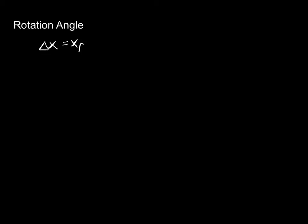In past chapters, when we wanted to measure how far something went, we usually used a displacement like delta x — how far did it go? We measured that as x final minus x initial. So in rotational motion, where something's going in a circle, we need some sort of equivalent to that, somehow measuring how far around a circle it's gone. We could measure in meters around a circle, calculating circumference, but it becomes kind of a mess to calculate, so we want something a little bit easier to use.